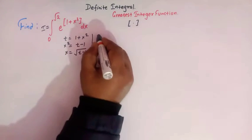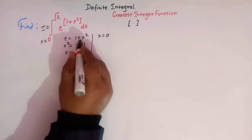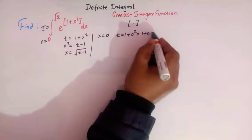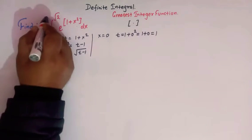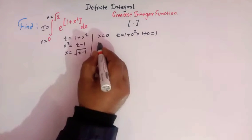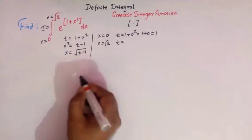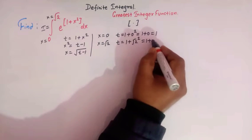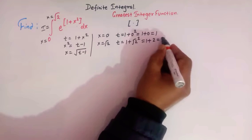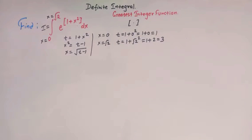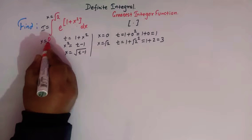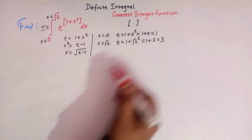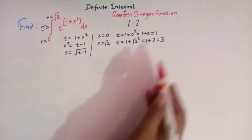When x equals 0, the value of t is 1 plus 0 squared, that is 1 plus 0, that is 1. And when x equals square root of 2, we have t equal to 1 plus root of 2 squared, that is 1 plus 2, that is 3. So when x varies from 0 to square root of 2, then t varies from 1 to 3.